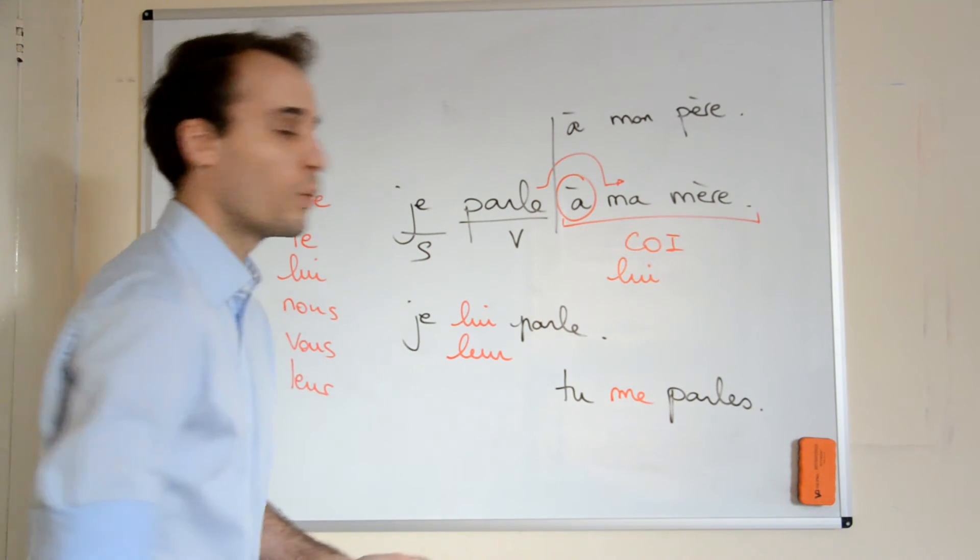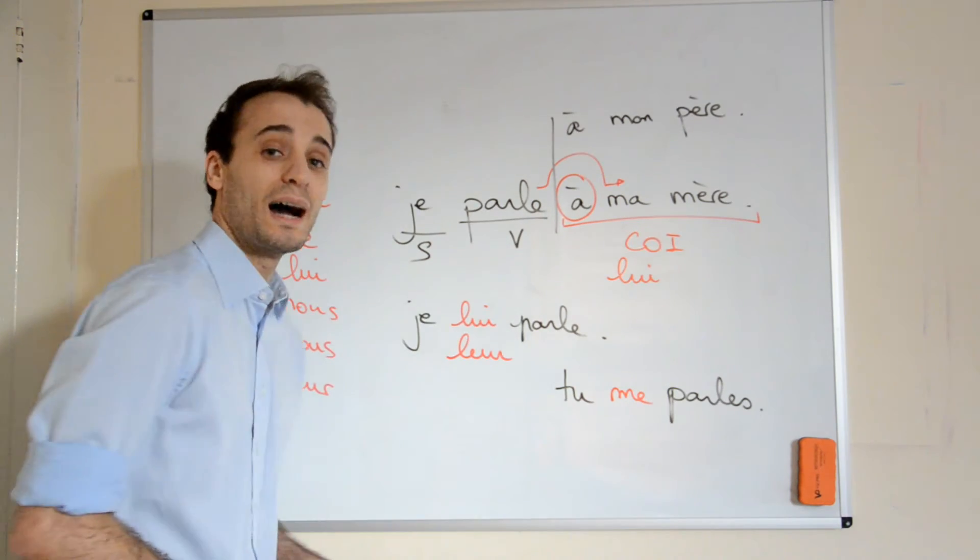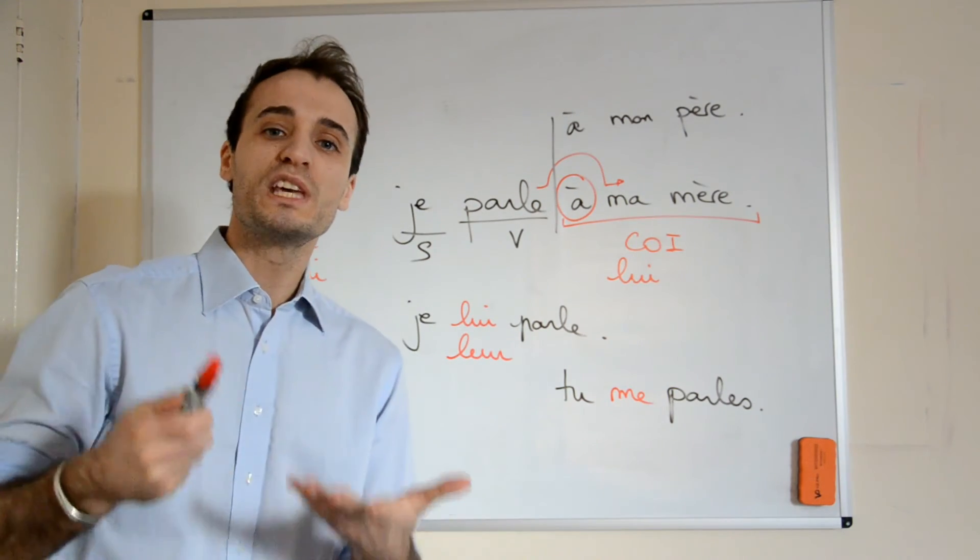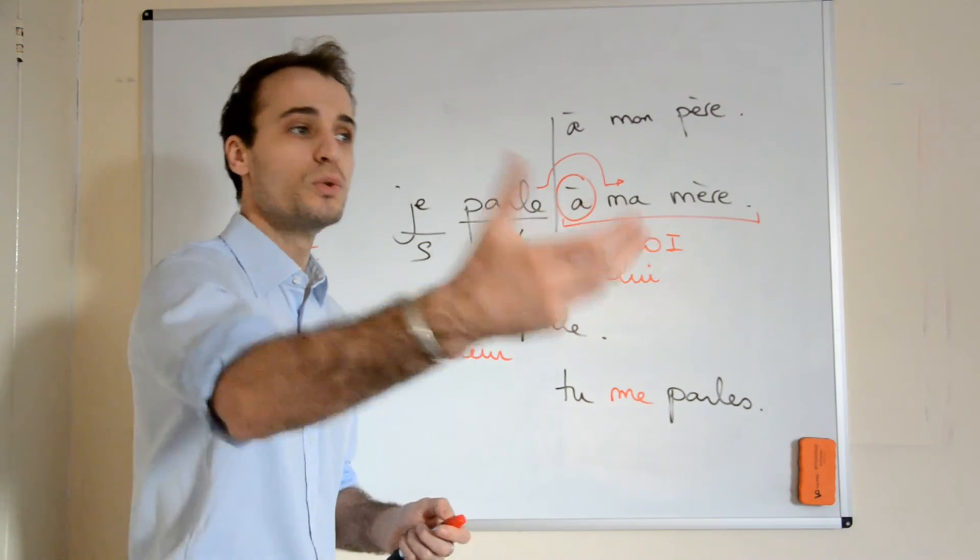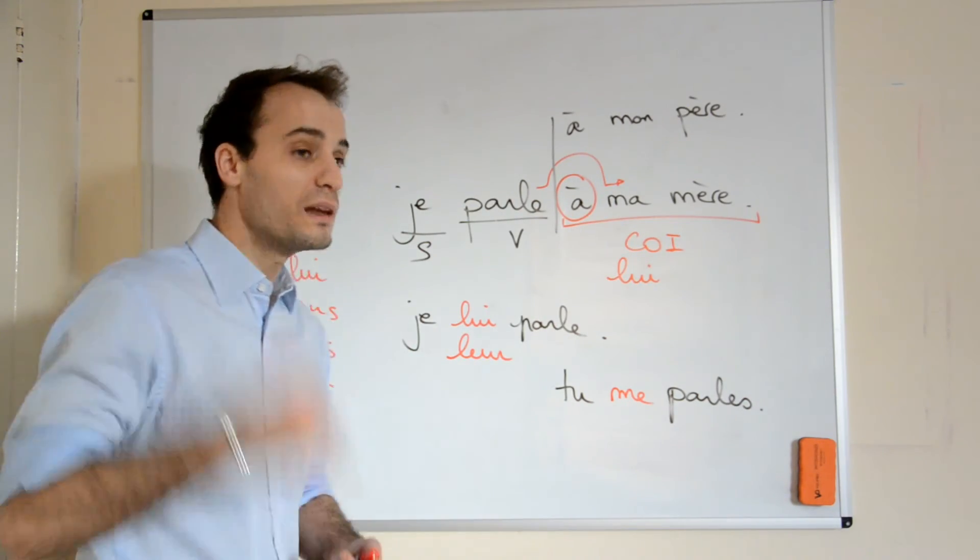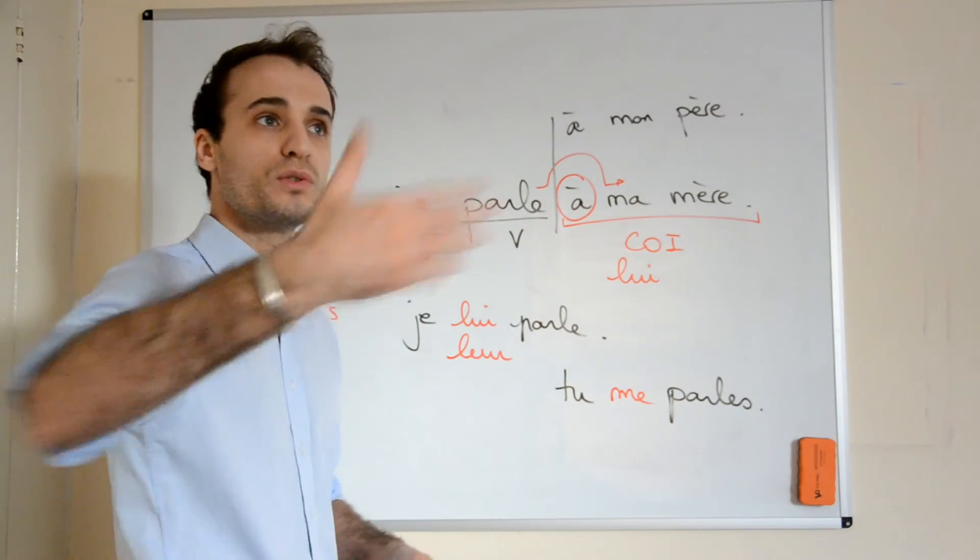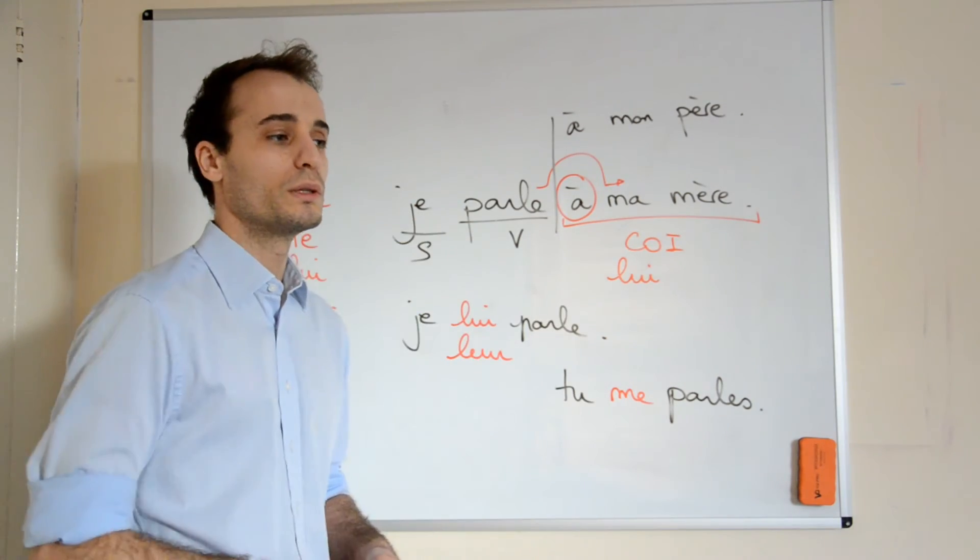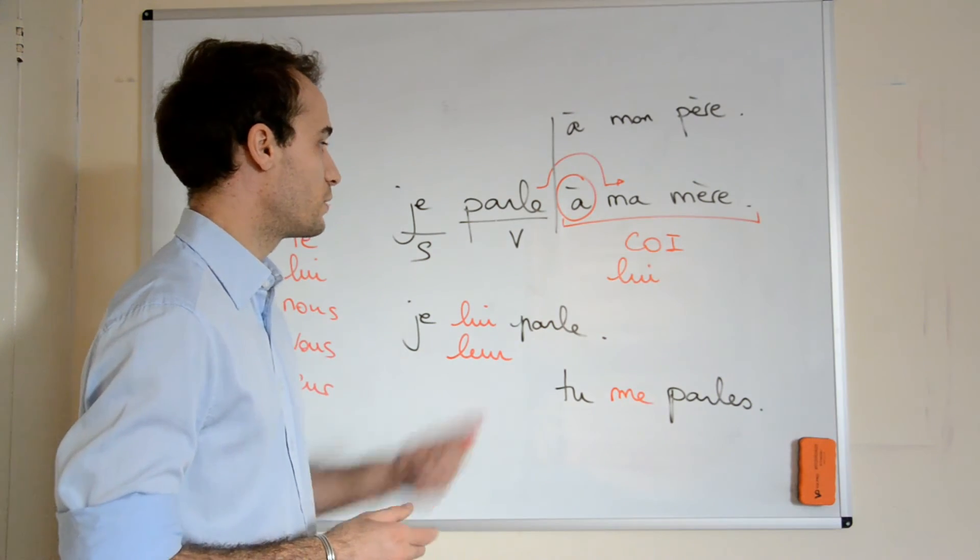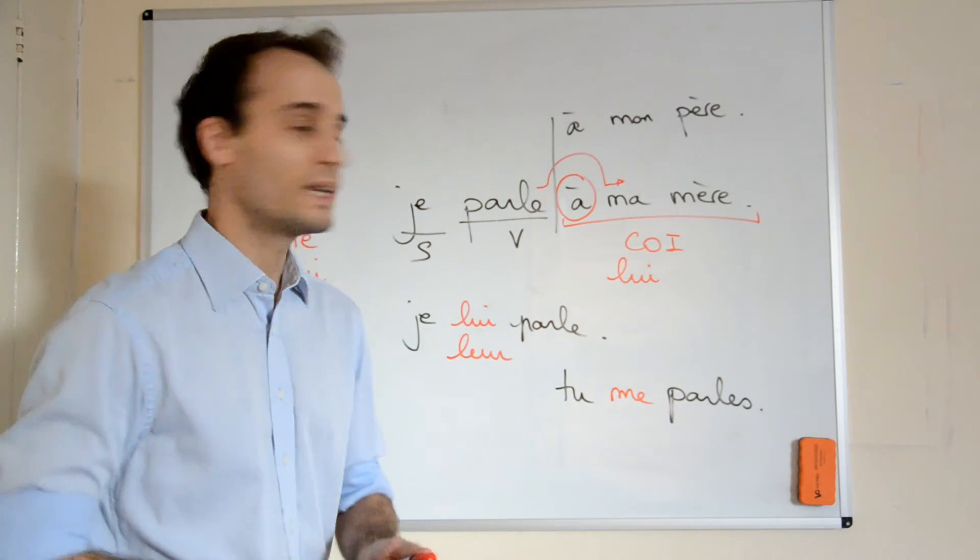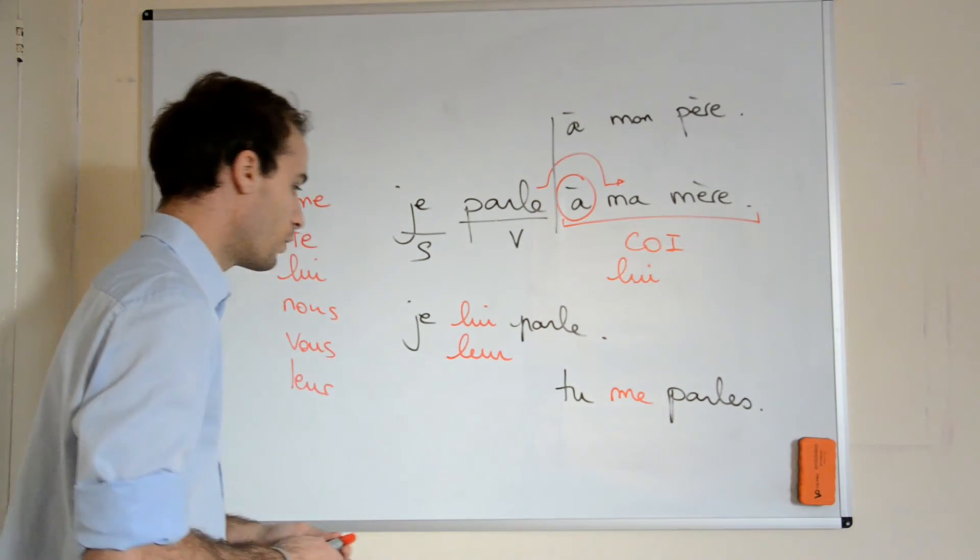So this is the list here. And of course you need to know what verbs are using à. I can say that all communication verbs are using à. So parler is a communication verb. I speak to. Écrire à, to write to. Téléphoner à, to phone to. To call to, to phone to someone. So, yes, you will have to learn what verbs are using à.